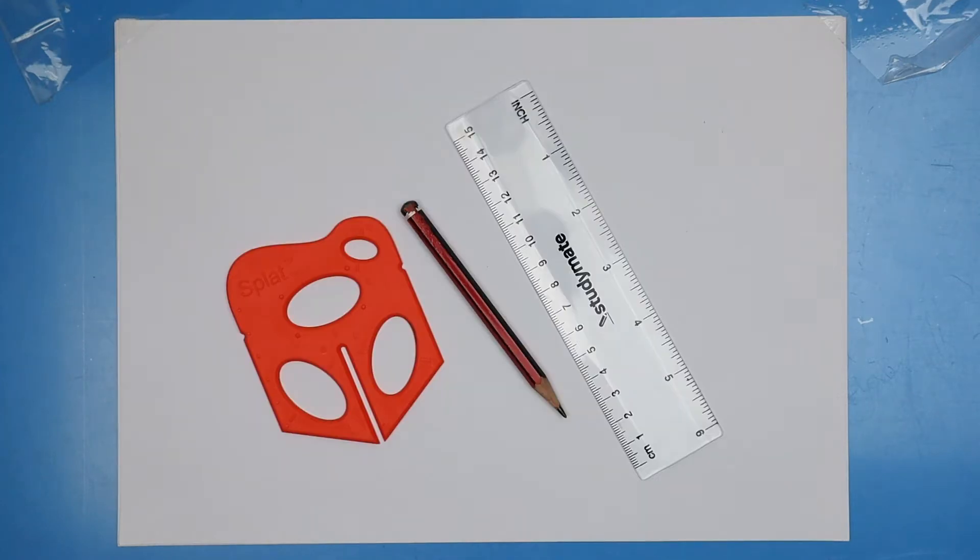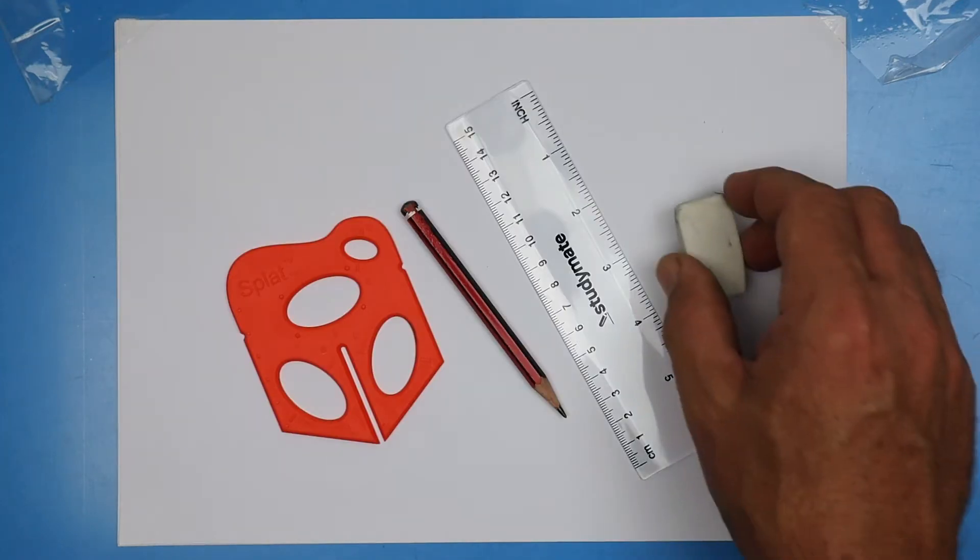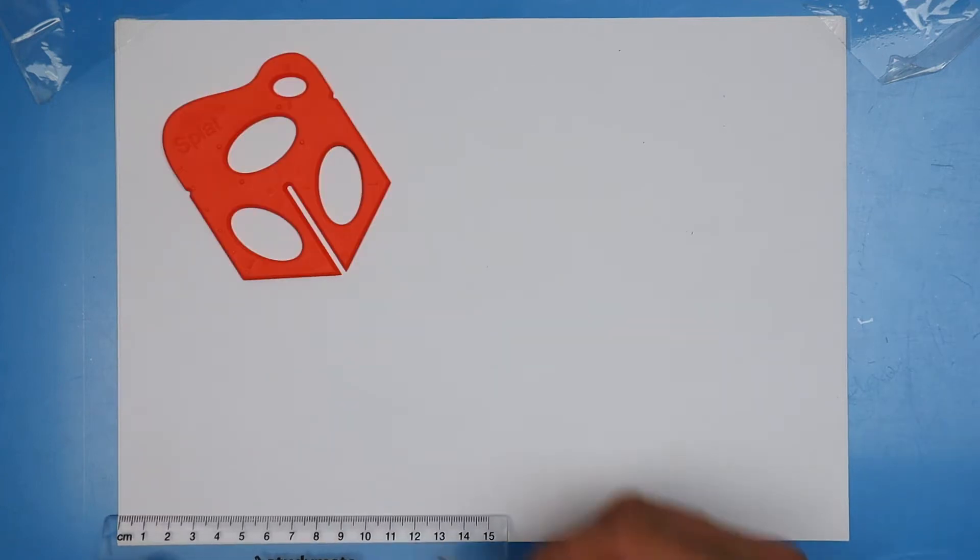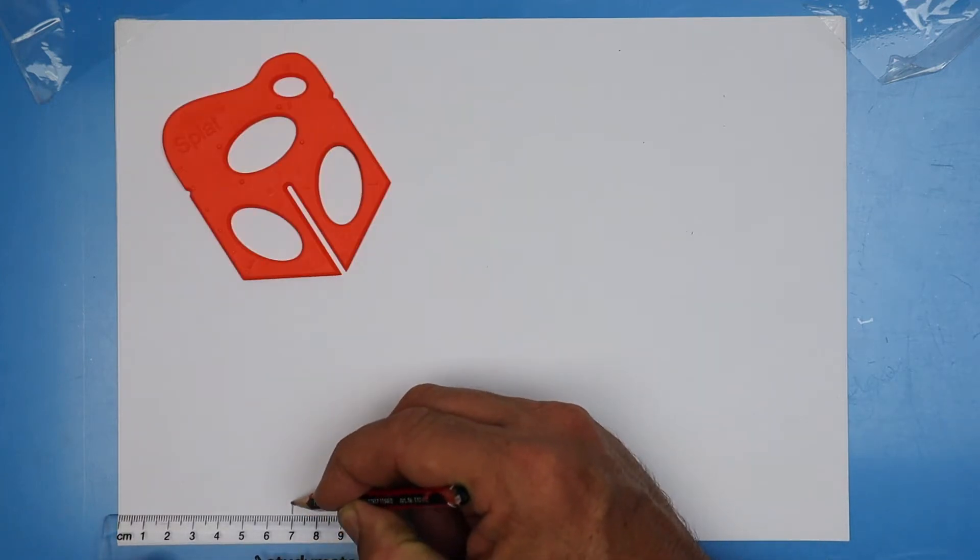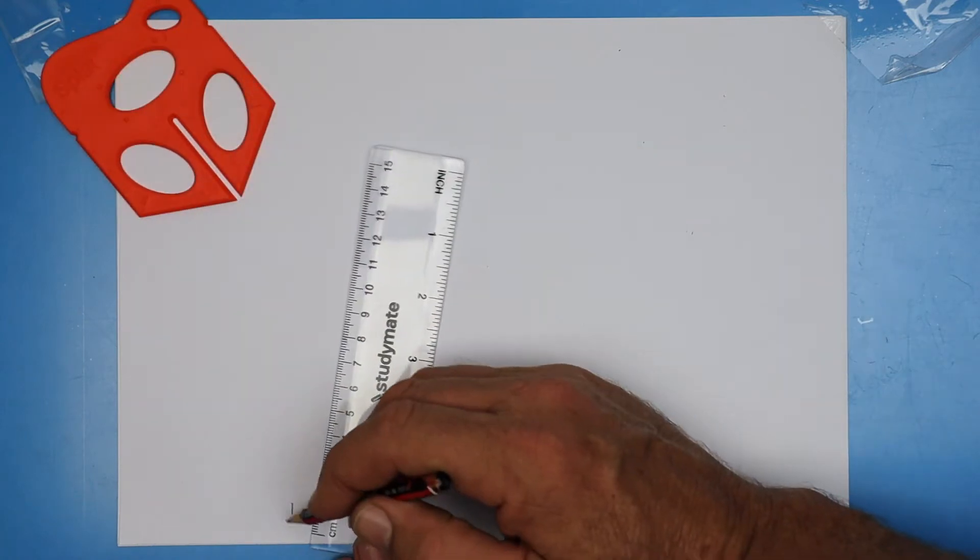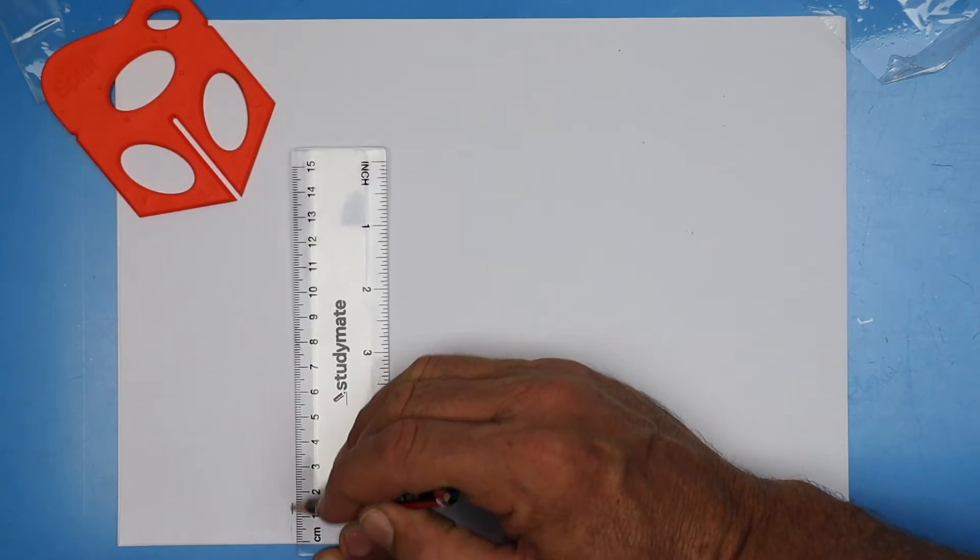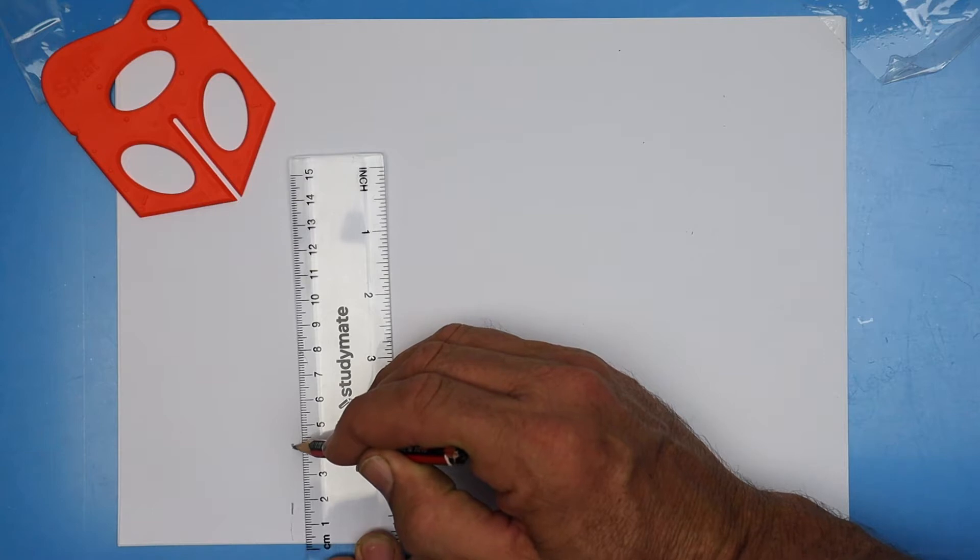Here's all you'll need to get started: splat, pencil, ruler, and maybe an eraser. I'm going to suggest a starting point so that you don't run out of room. Measure across seven centimeters and then measure up four centimeters. That's your starting point.